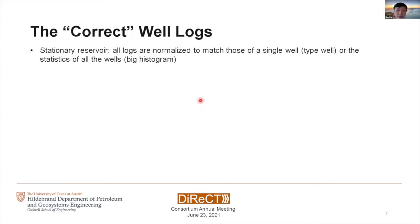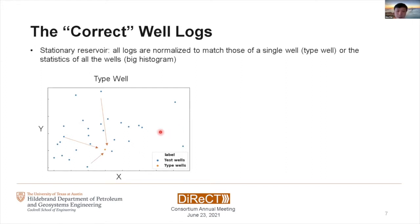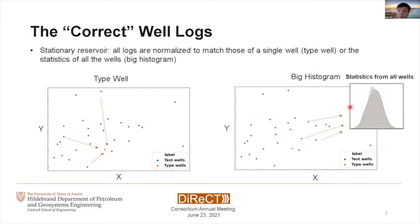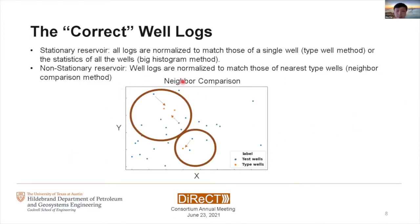How should we select correct well logs or the type well for different test wells? The first industry method is the type well method — choosing just one type well in the reservoir and matching all test wells to it. There is also the histogram method, which combines well logs from all wells to form a big histogram and matches statistics for each individual well. Additionally, the neighbor comparison method normalizes test well logs to match those from the adjacent type well.